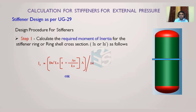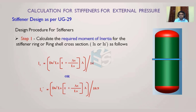If we want to take advantage of the shell as well, we calculate the required moment of inertia of the stiffener ring and shell section combined. That formula is: Do² × Ls × (t + As/Ls) × factor A, divided by 10.9. This Is' is what we need to calculate when designing for the combined cross-section.